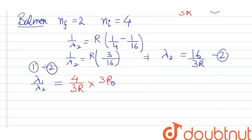Canceling 3R with 3R here, we get ratio 1 is to 4 because on canceling 4, 4, 16. So the final answer will be λ₁ ratio λ₂ equals to 1 is to 4. I hope that answers your question.